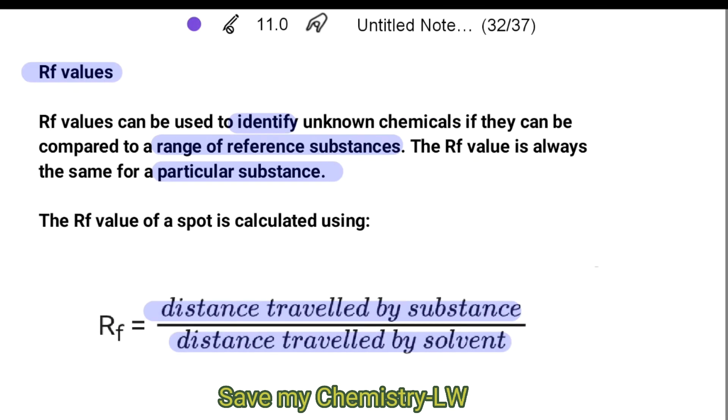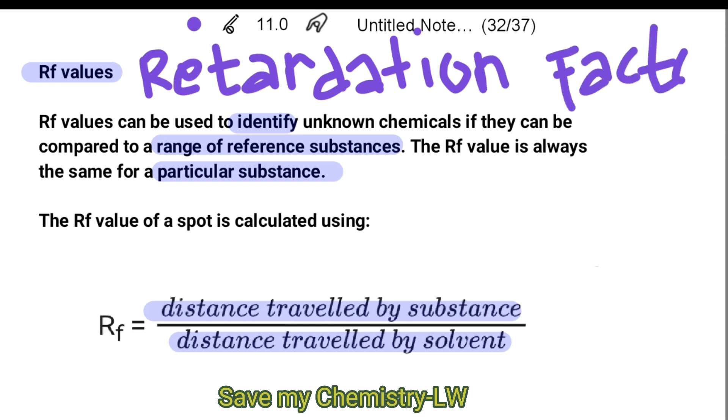The RF value of a spot is calculated using this formula. RF equals distance traveled by substance over distance traveled by solvent. Or we can call it RF as retardation factor.